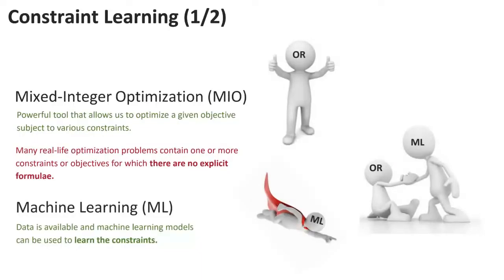Before going into constraint learning, I would like to briefly mention what mixed integer optimization is, even though I assume most of you know. It is a powerful tool to optimize a given objective function subject to some constraints. One of the most known optimization problems is the traveling salesman problem — finding a route to visit a set of cities, visiting each city once and returning to the original point. It is used many times in real life for solving many different problems.